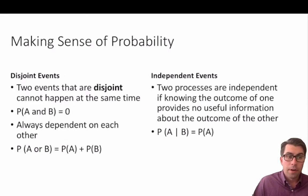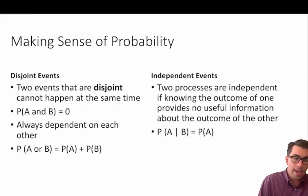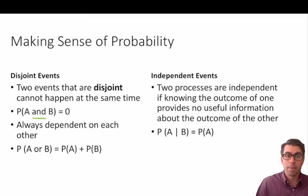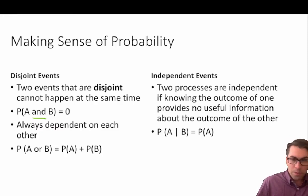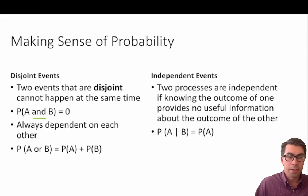There are also disjoint events and independent events. A disjoint event means two events that cannot happen at the same time. In statistical language, the probability of A and B is equal to zero. A good example is putting on your socks in the morning — you can't put both socks on at the same time. You have to pick either your left sock or your right sock to put on first, so the probability of putting both on together equals zero.